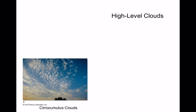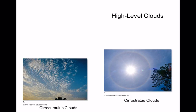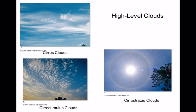Here are pictures: cirrocumulus — those little fluffs would be about the size of your pinky. That's a halo around the moon caused by a wispy cirrostratus cloud. A halo has a space between itself and the sun or moon, while a corona actually touches the sun or moon. And then this is your mare's tail — cirrus — the highest cloud type.